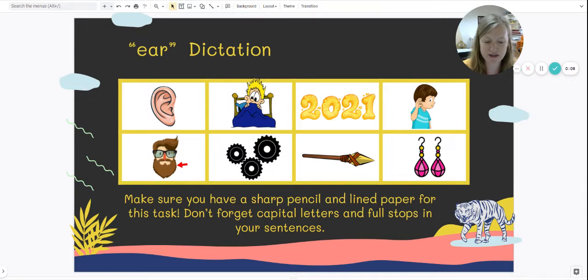You need your lined paper ready with numbers 1 to 8 written down the left-hand side. And remember, you can pause or rewind at any point if you need more time or you want to hear a word again.